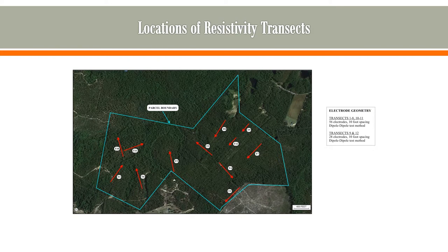These are the locations where we performed resistivity transects. We did a total of 12 transects across the site. The majority of them utilized 56 electrodes at a 10-foot spacing with the dipole-dipole method, and a couple of them used 28 electrodes based on limited access.